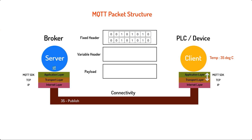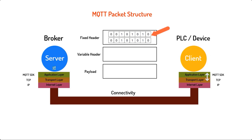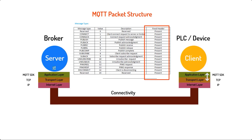Because with MQTT we have multiple types of messages — connect, disconnect, publish, subscribe, etc. — our header needs to be able to represent all these different types. This is what the fixed header is responsible for. It does that by using the first four bits of the first byte to indicate the message type. Because a 4-bit binary number produces 16 unique decimal numbers, MQTT has a way of representing 16 different message types. A table shows MQTT message types, their corresponding 4-bit equivalent decimal values, their descriptions, and whether they are present on the fixed header or not.